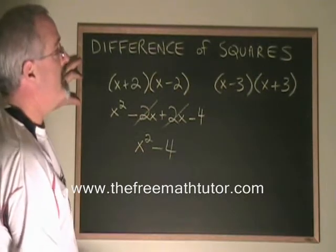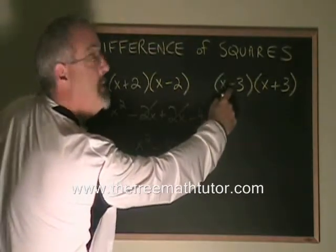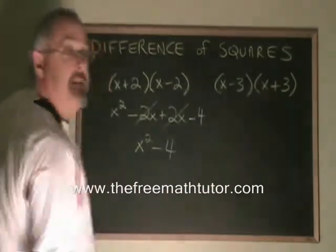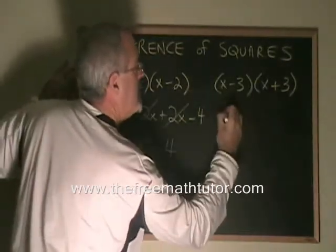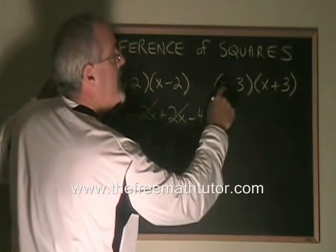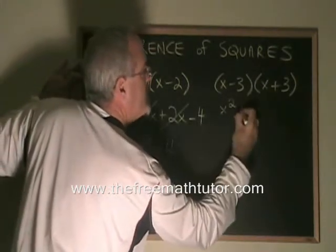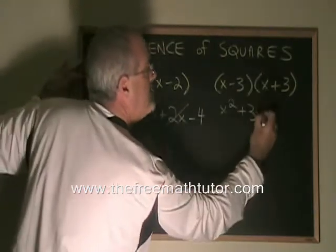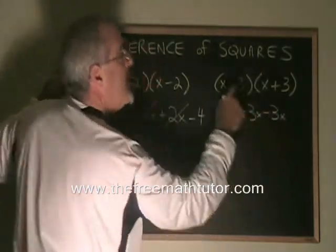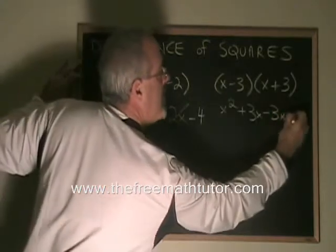Does it work the same way when we have the minus in the first binomial and the plus in the second? Let's find out. x times x is x squared. x times 3 is plus 3x. Minus 3 times x is minus 3x. Minus 3 times 3 is minus 9.